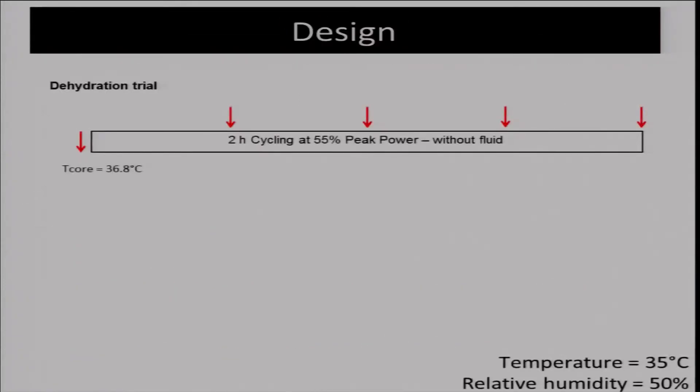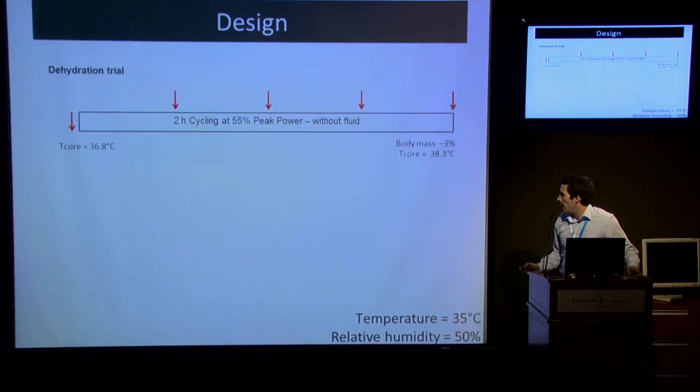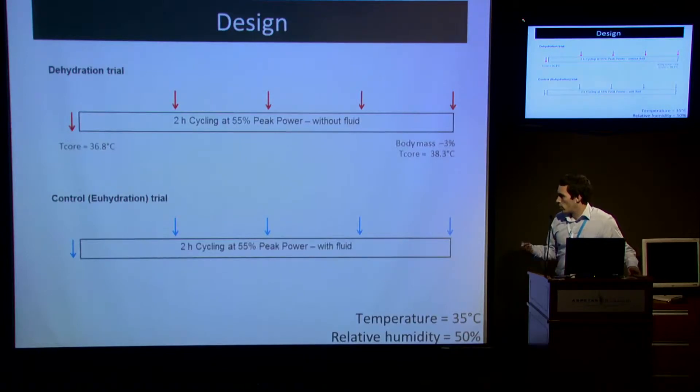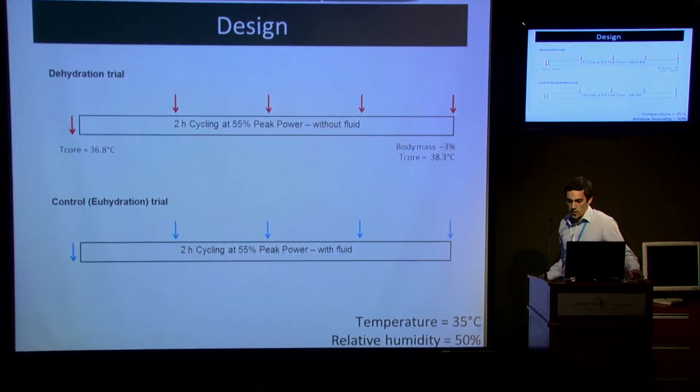This is our study design. Our 10 participants completed 2 hours of cycling at 55% peak power without fluid ingestion, and measurements were made at rest and every half an hour during exercise. This resulted in a 3% body mass deficit and an increase in core temperature. In our control trial, a euhydration trial, the participants returned one week later to perform the same exercise but with regular fluid ingestion to maintain body mass. Both trials were completed in 35 degrees temperature and 50% relative humidity.